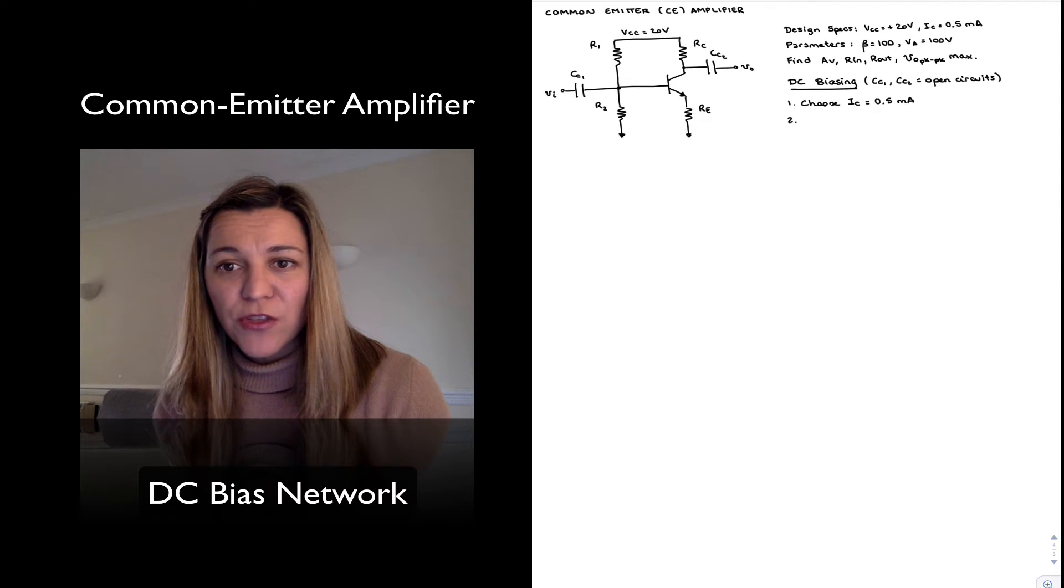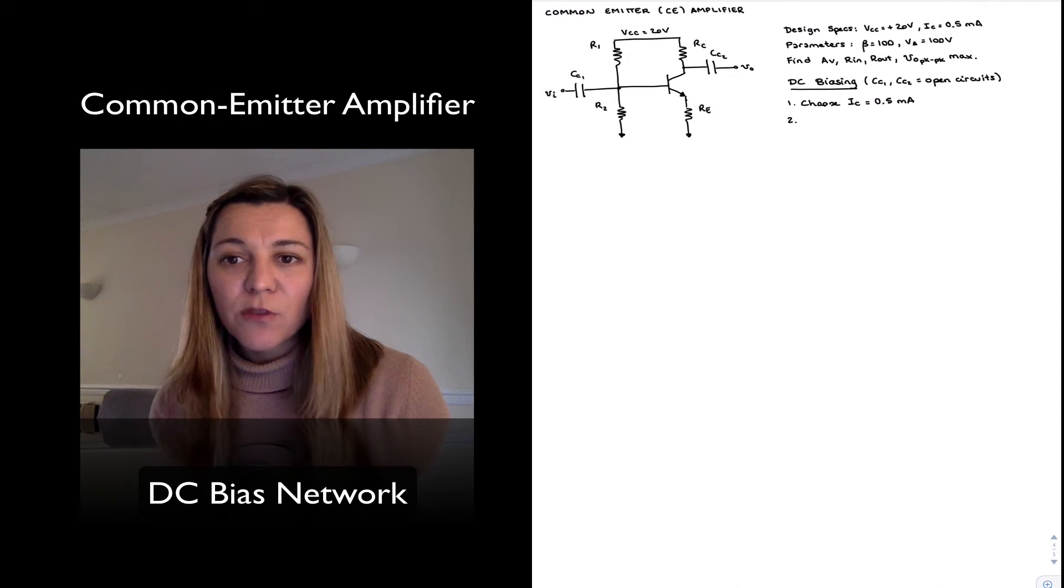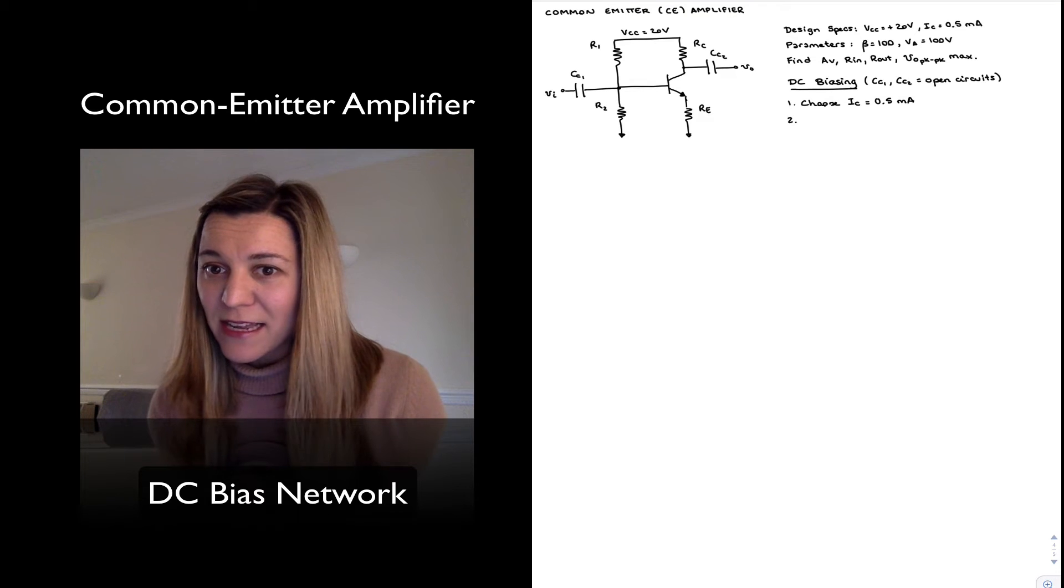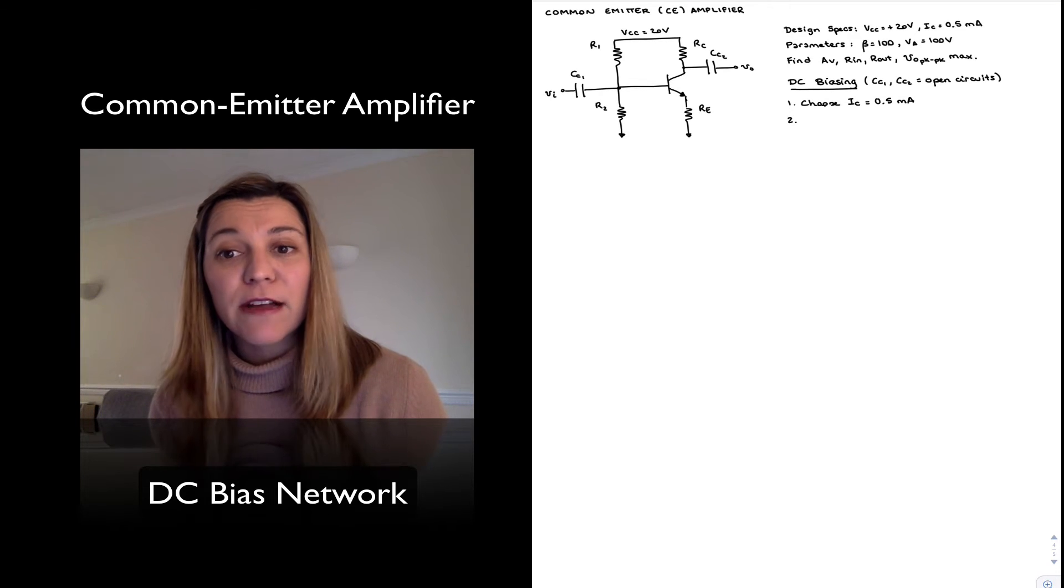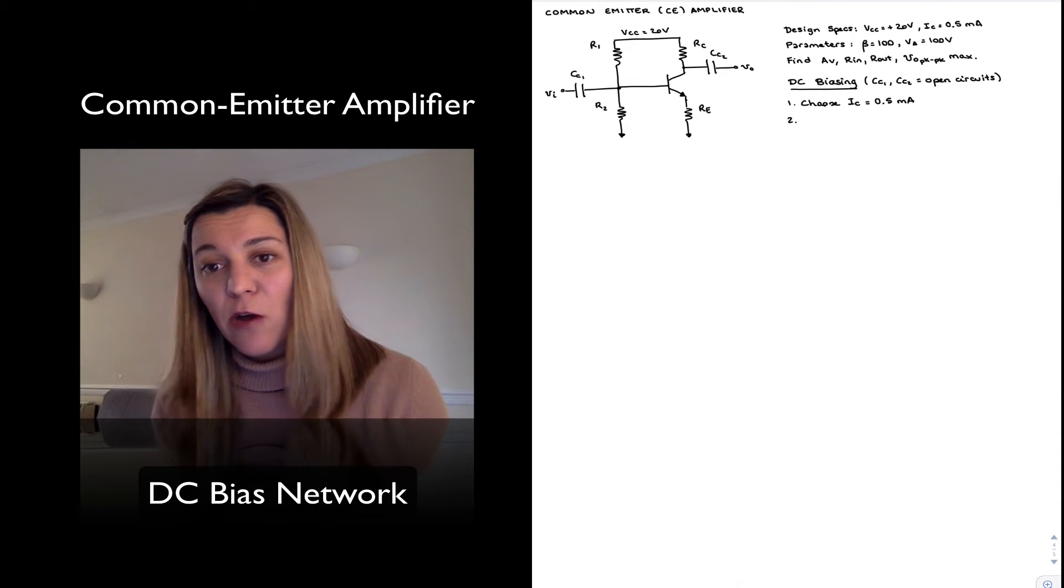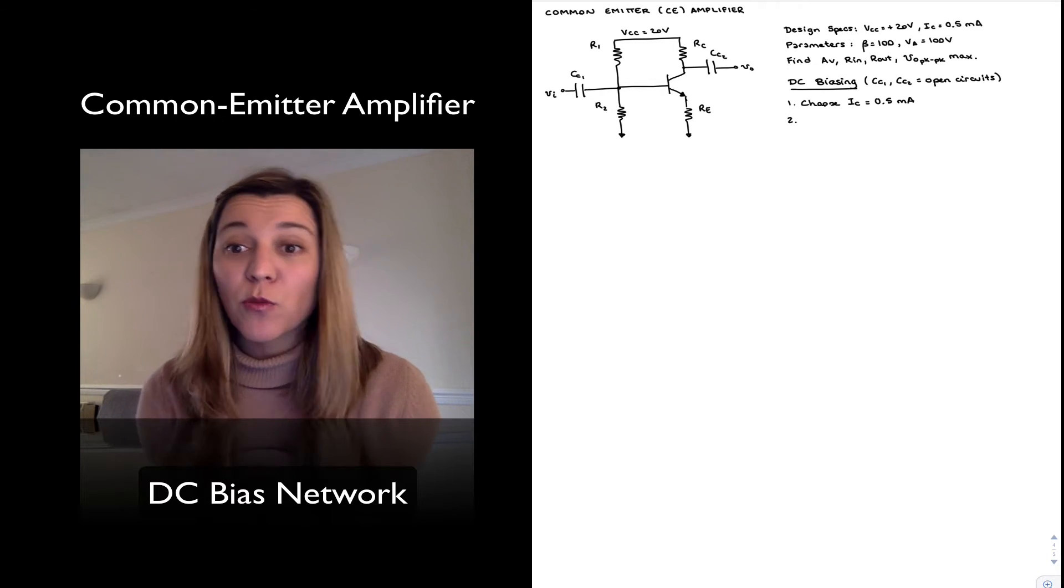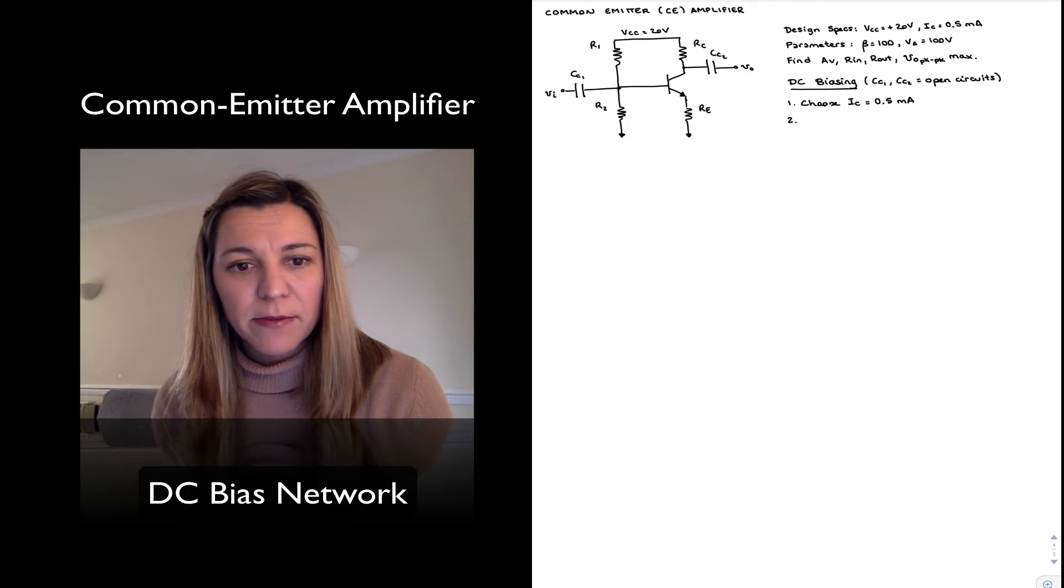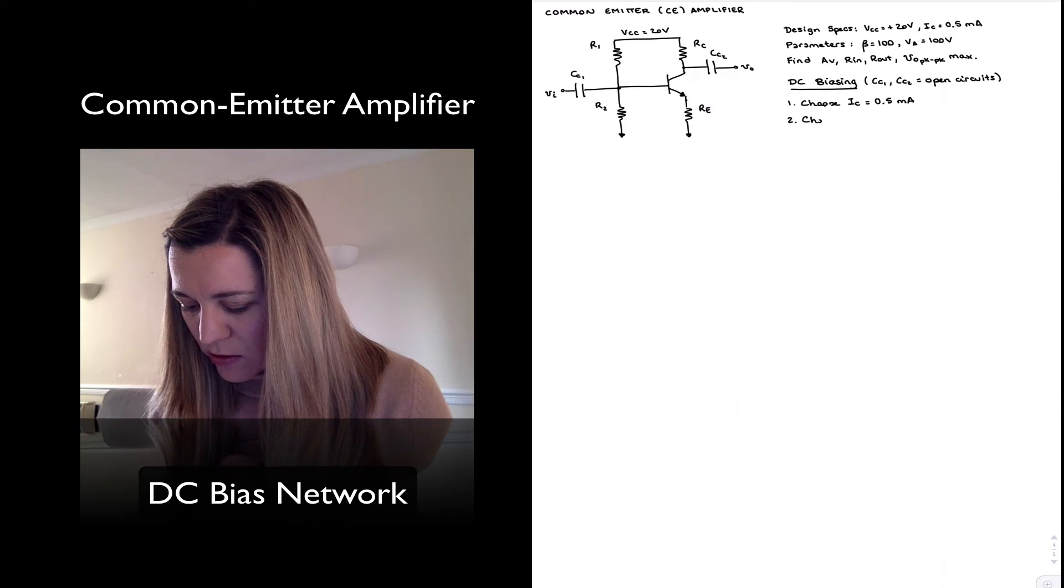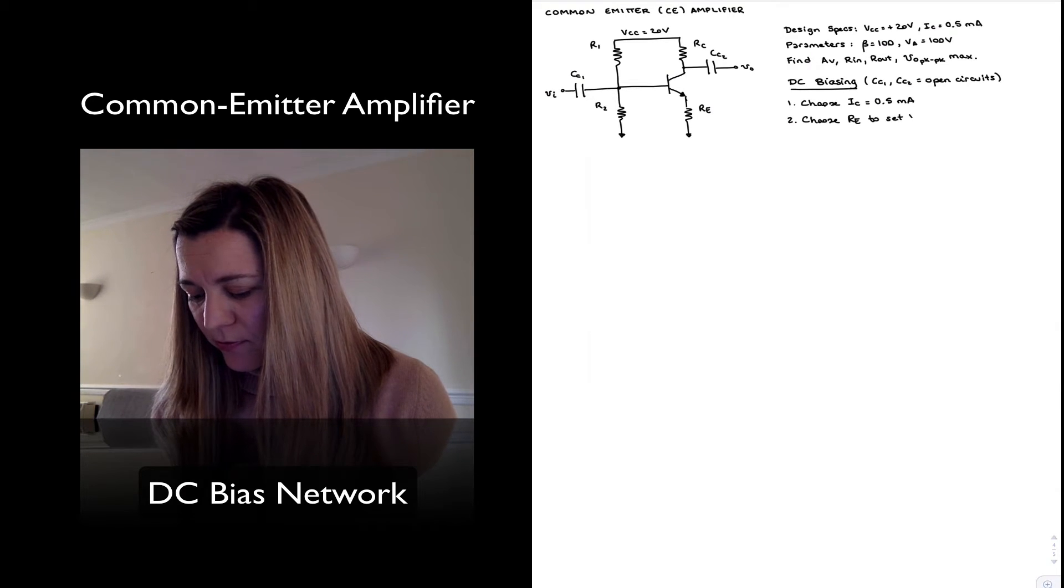The second thing is, remember we've mentioned that in order to have beta stability, we want our emitter voltage to be approximately equal to one volt. It's just a rule of thumb, nothing says it has to be exactly one, but we want it to be a high enough value to provide temperature or beta stability without decreasing our output voltage swing too much. So we don't want to go too high so that we decrease our output voltage swing, we don't want to go too low so that we don't have very good beta stability for our circuit. We decided one volt was a fairly good compromise.